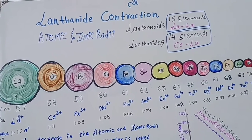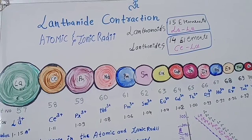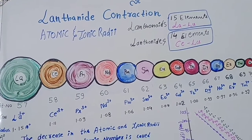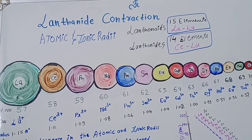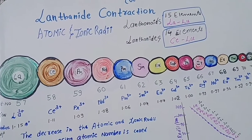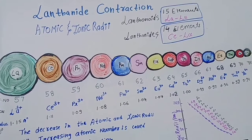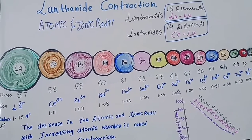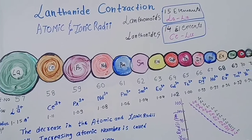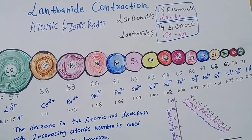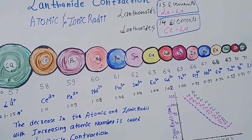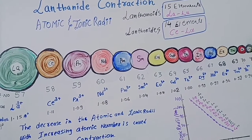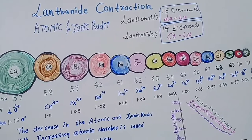Hope you have already watched the electronic configuration of the lanthanides in my previous video. If you have not watched it, do watch it first. Students, as we already know, there are 14 elements termed as lanthanides from cerium to lutetium, and the 15 elements from lanthanum to lutetium are termed as lanthanoids.